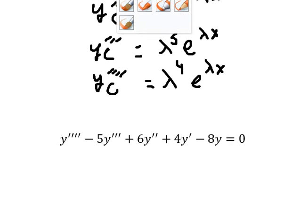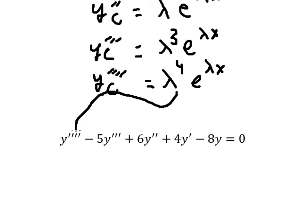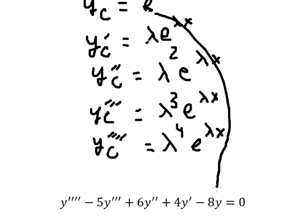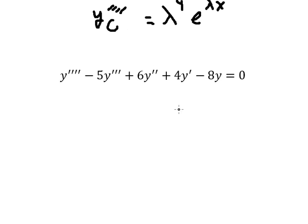Now I will substitute each derivative into the equation: this one goes here, this one goes here, this one goes here, this one goes here, and this one goes here. And now we have the characteristic equation set up.